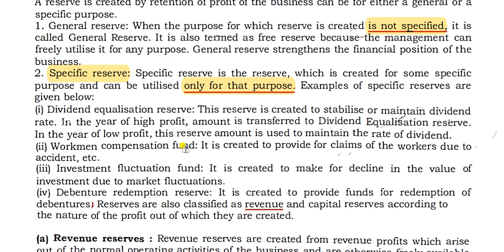General Reserve and Specific Reserve — within specific reserves, different types exist. Dividend Equalization Reserve is created to stabilize or maintain the dividend rate. In a year with high profit, an amount is transferred to this reserve to maintain stability, and in a low-profit year this reserve amount is used to maintain the rate of dividends.